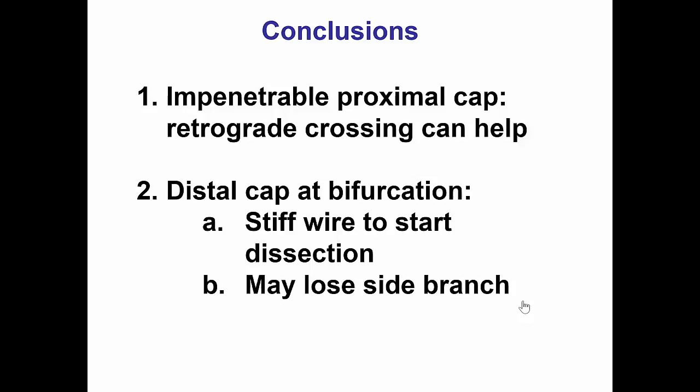Nevertheless, we still lost the side branch of the posterolateral vessel, which remains a risk when there is a bifurcation at the distal cap. This can sometimes be recanalized with further attempts, especially if we have not reached our contrast or radiation limit, but sometimes the side branch may have to remain occluded during the current case and be left for a subsequent crossing attempt in the future. Thank you.